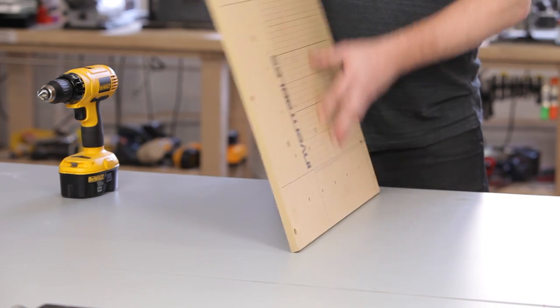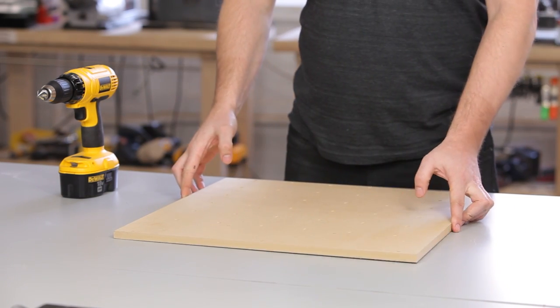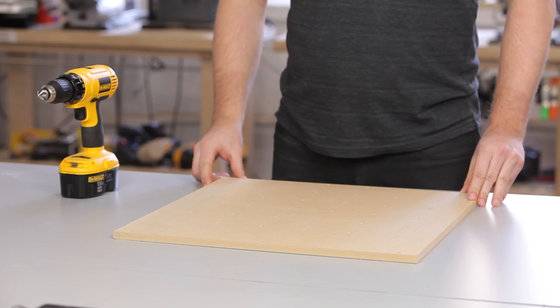The first thing to do with your waste board is countersink the holes on the back. You'll only be countersinking the holes where we're going to put in threaded inserts.